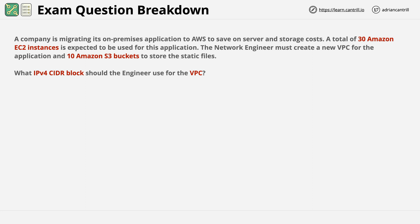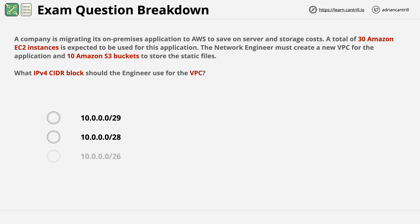If you read through the question you're going to spot a few key things. First, a migration requirement for 30 EC2 instances and 10 S3 buckets. You're being asked what IPv4 CIDR should the engineer use for this VPC. The answers are: A) 10.0.0.0/29, B) 10.0.0.0/28, C) 10.0.0.0/26, and D) 10.0.0.0/27.